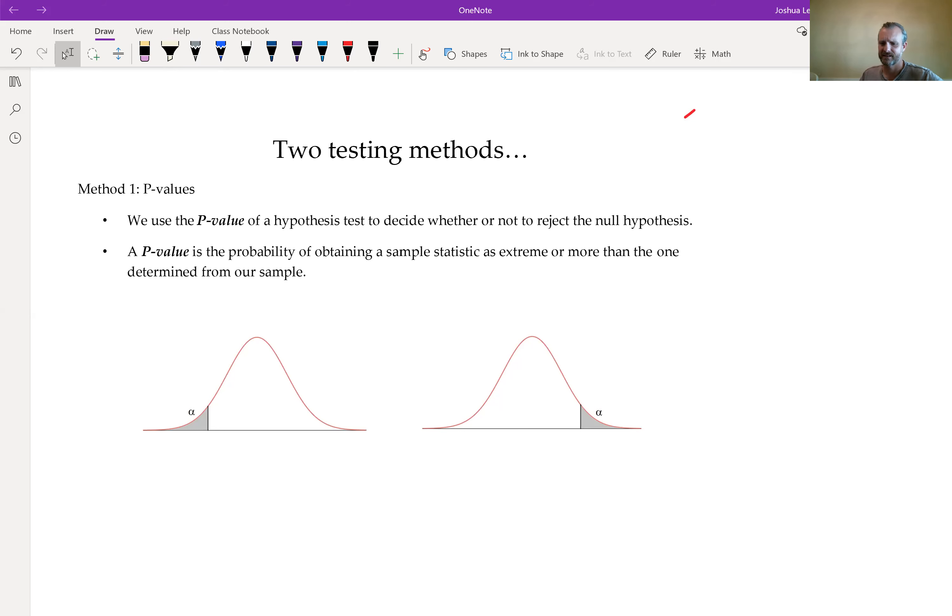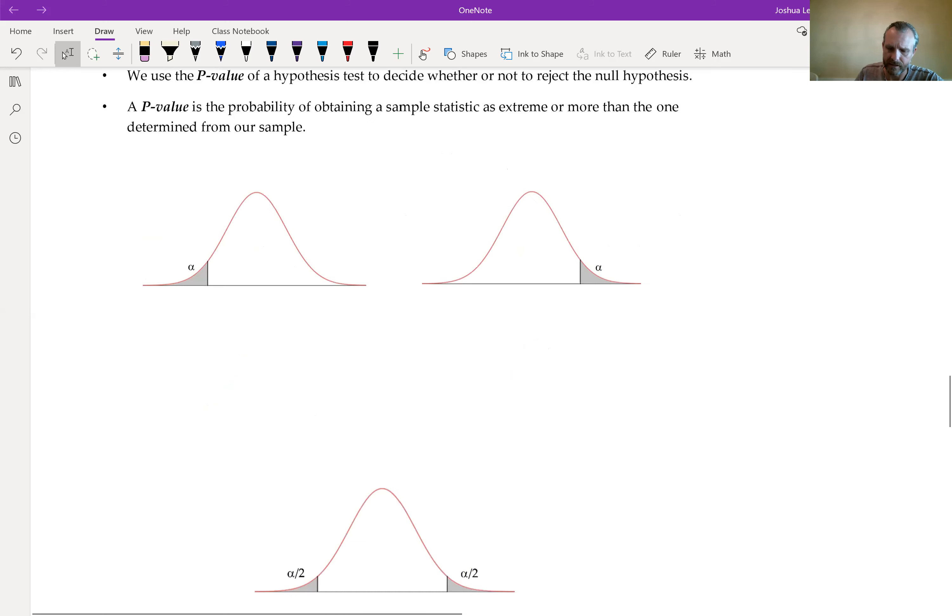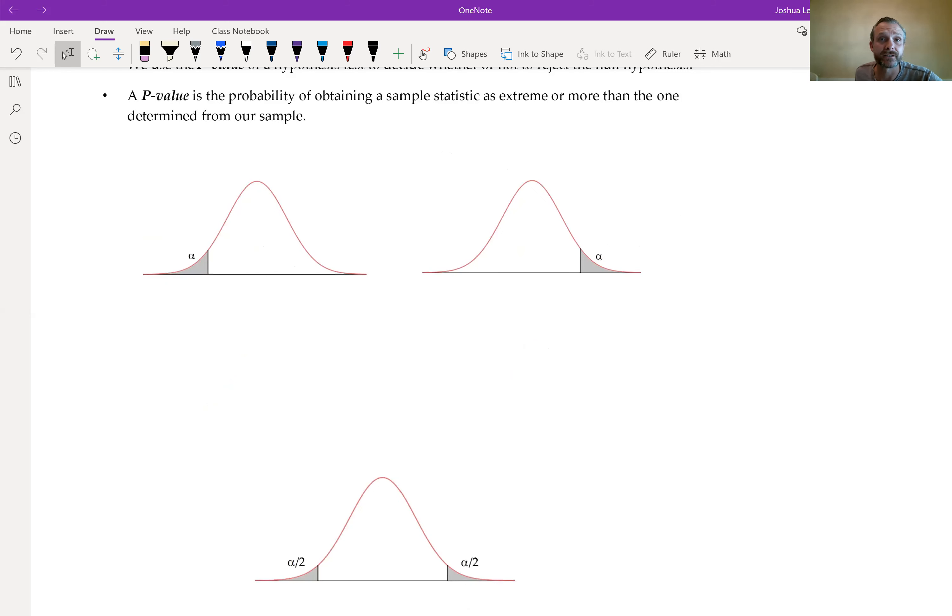We use the P-value of a hypothesis test to decide whether or not to reject the null hypothesis. Now remember, that speaks nothing of the claim. The claim could still be in either hypothesis. So this is just to decide what to do with that pesky null. A P-value is the probability of obtaining a sample statistic as extreme or more than the one determined from our sample.